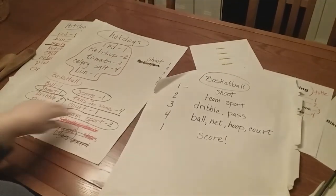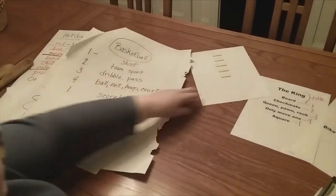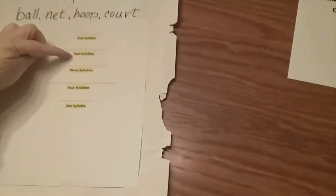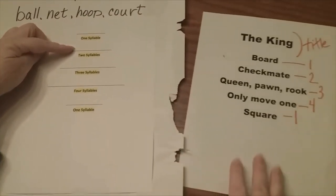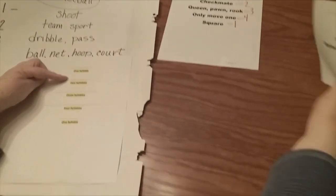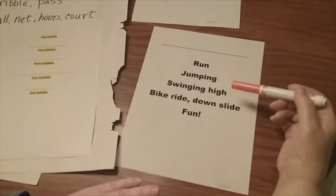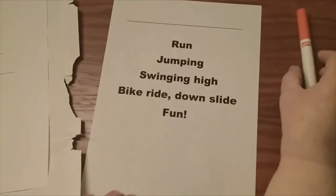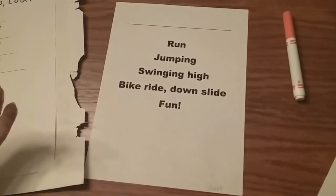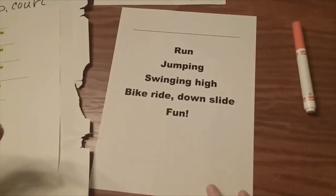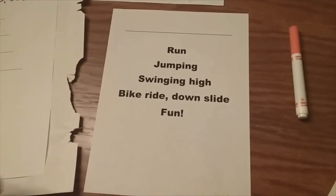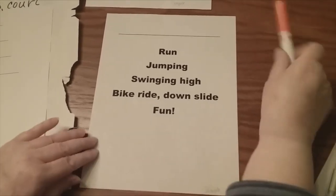Now we're going to go to some planned work for you to do. Here's the worksheet that tells me how many syllables I will write on each line. So here's another one — I'm going to have you guess what the title would be and check out the syllables. Run, jumping, swinging high, bike ride down slide, fun. So I've got all my syllables on there and I didn't make a mistake.